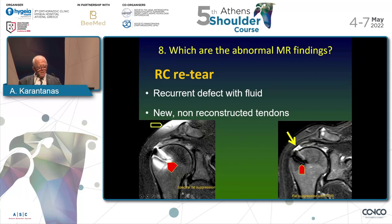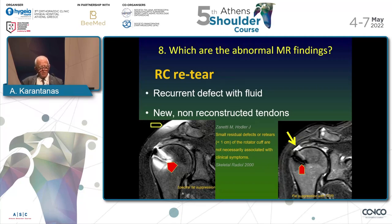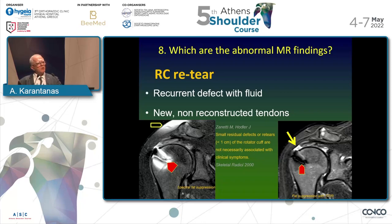We may see fluid into the tendon — is this a retear? This is questionable because a paper published in Skeletal Radiology suggested that small defects smaller than one centimeter may be totally asymptomatic. So small defects may not be clinically important. Literature is not clear enough regarding the rate of retear — we may have retear between 9% and 94% of patients who have rotator cuff repair.